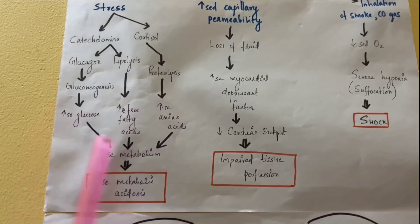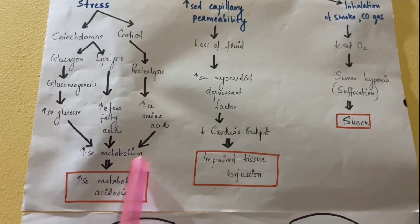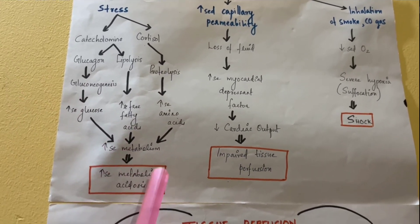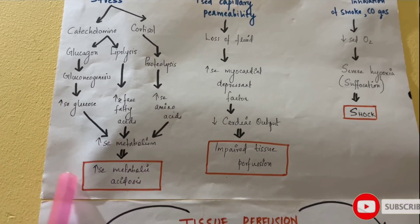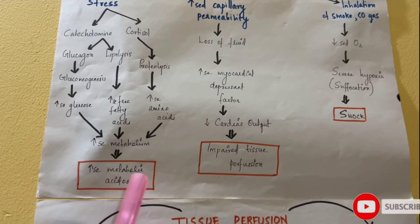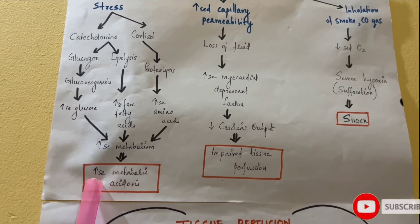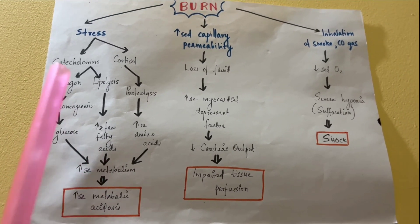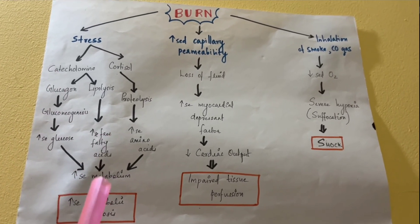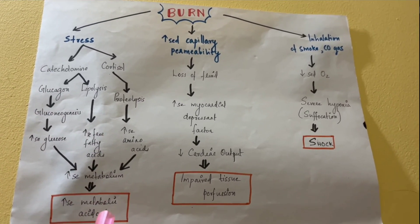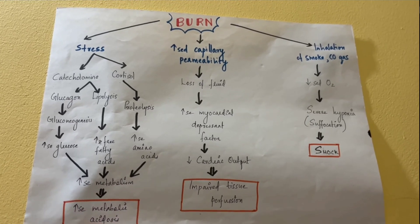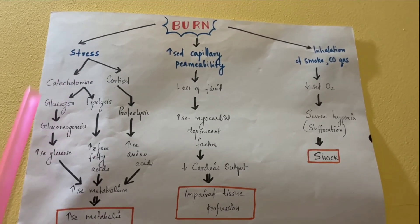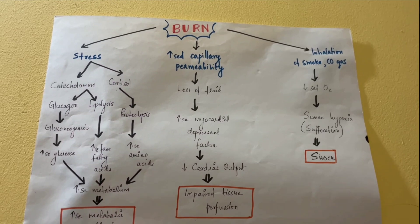As a result of elevated glucose, fatty acids, and amino acids in the body, there will be a metabolic acidosis state. The accumulation of these metabolites leads to metabolic acidosis. That is all about the stress condition — stress is a very important component of burns pathophysiology.